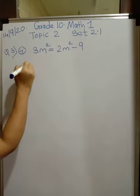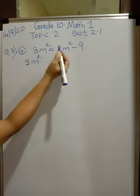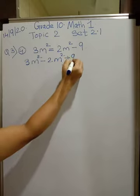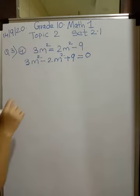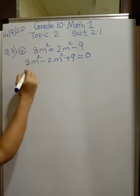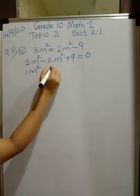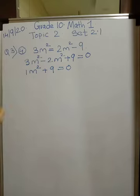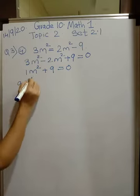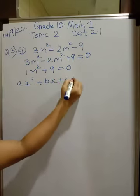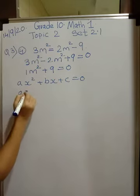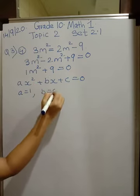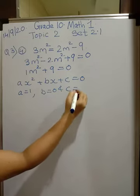So we have 3m² — shifting this — minus 2m² plus 9 is equal to 0. So 3m² minus 2m² is 1m² plus 9 is equal to 0. Comparing this with ax² + bx + c = 0, we have a is equal to 1. There is no x term, so b will be equal to 0 and c will be equal to 9.